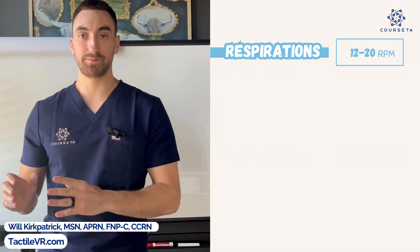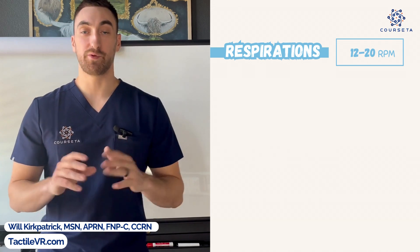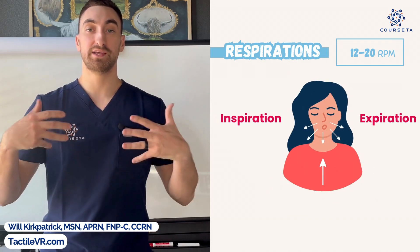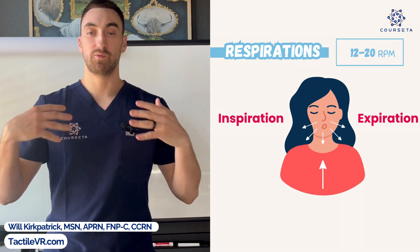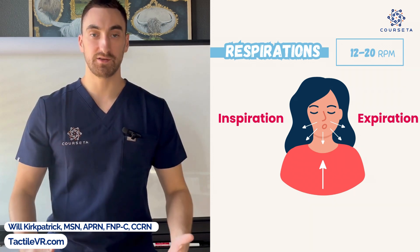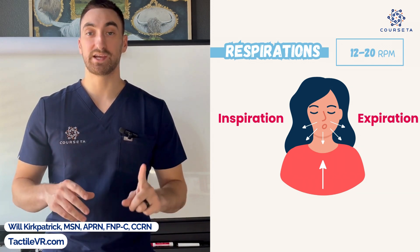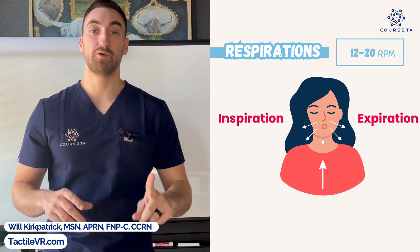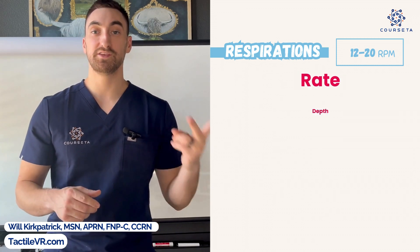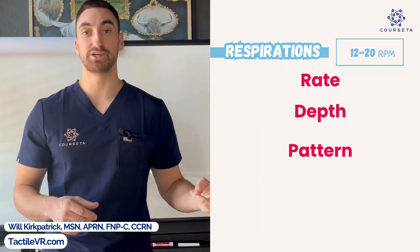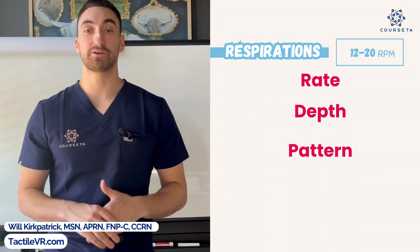Next is respirations. The normal range for an adult is 12 to 20 respirations per minute. Remember, one respiration is one full breath in — one inspiration — and one full breath out — one expiration. That cycle counts as one respiration. The typical method is to measure for 30 seconds and multiply by two, noting the rate, depth, and pattern.